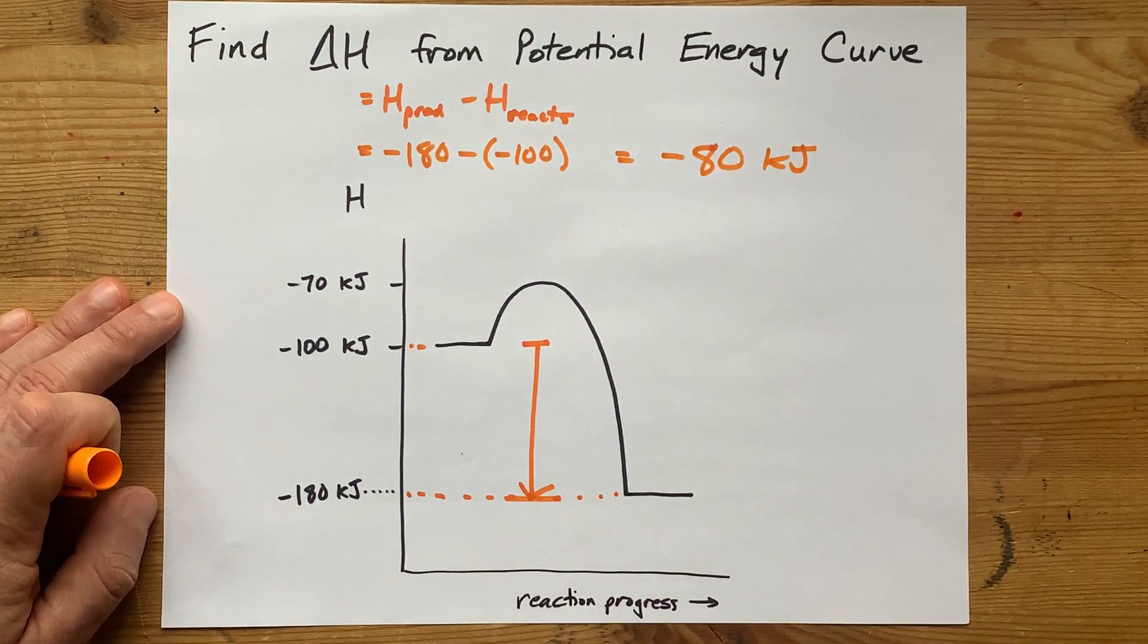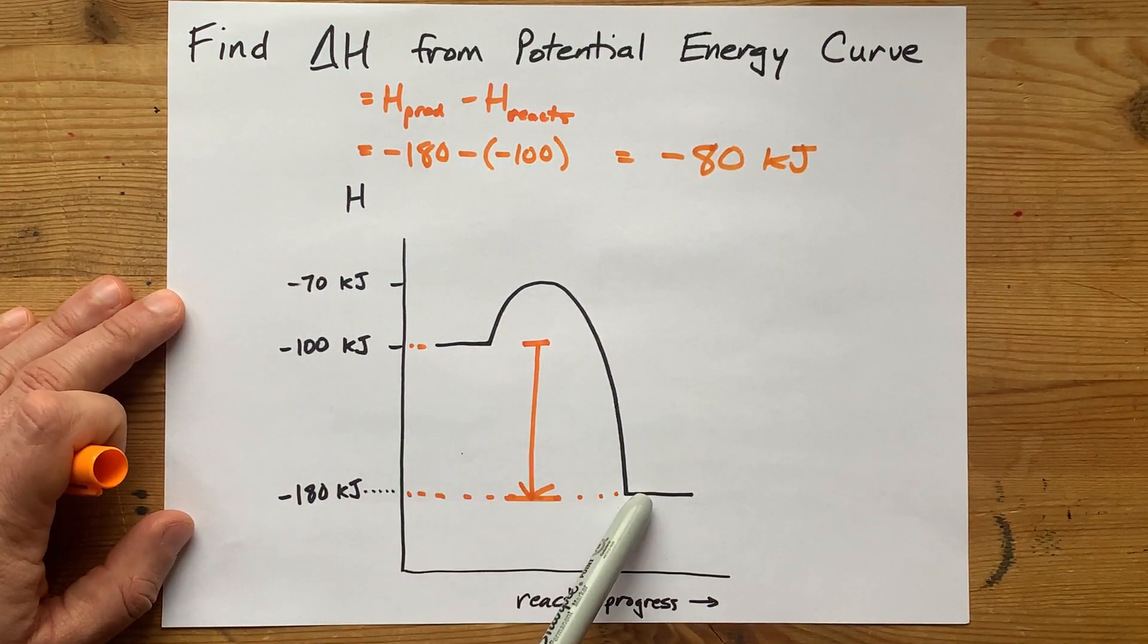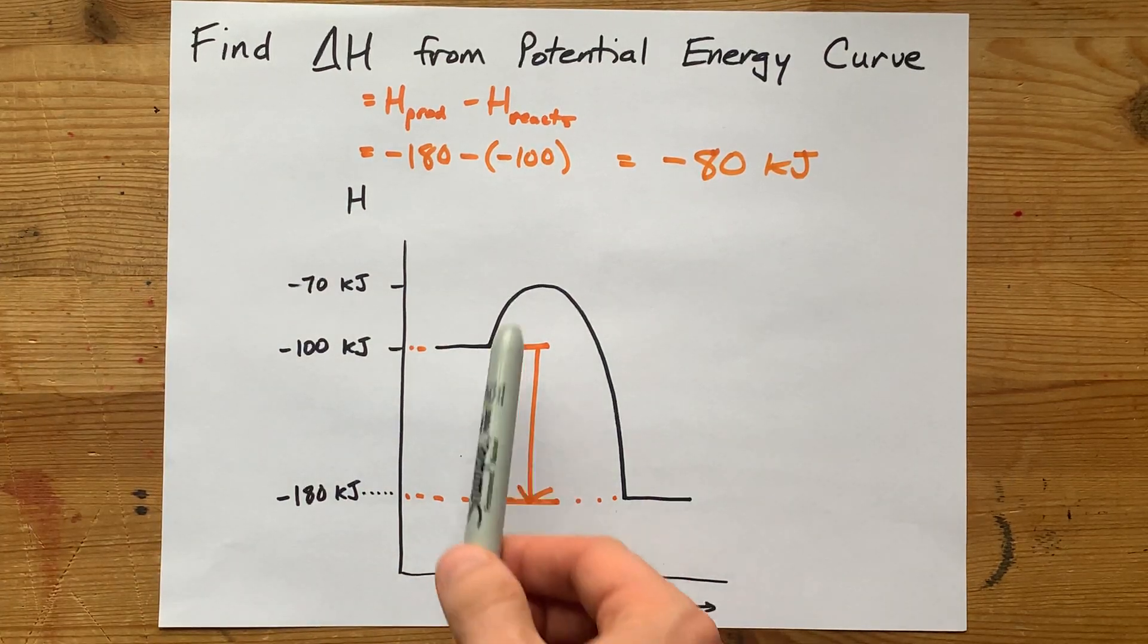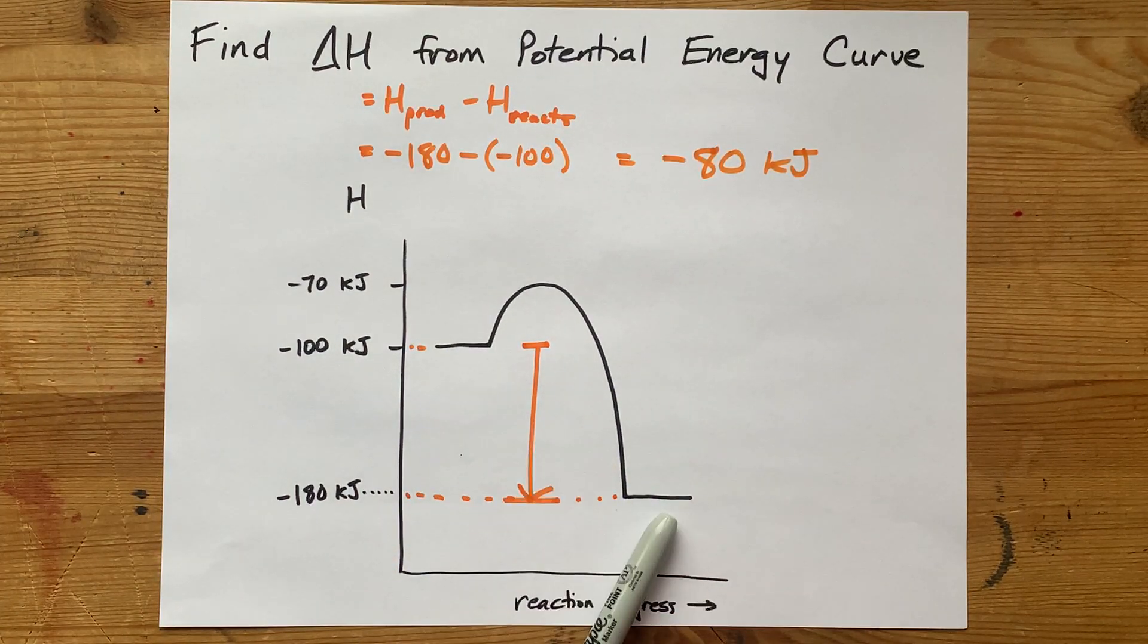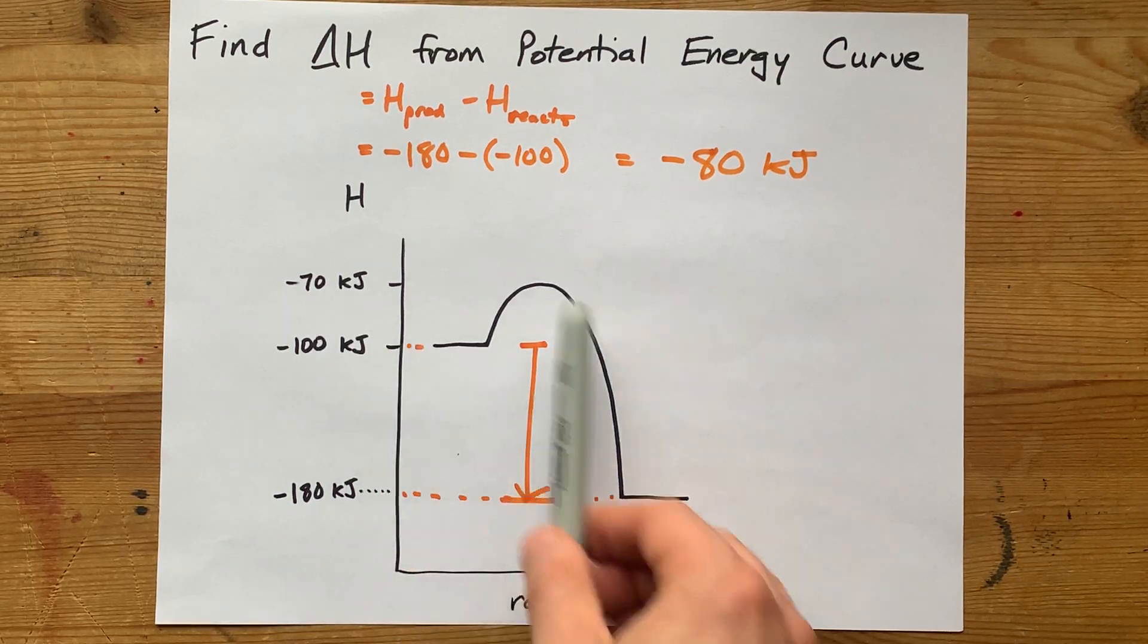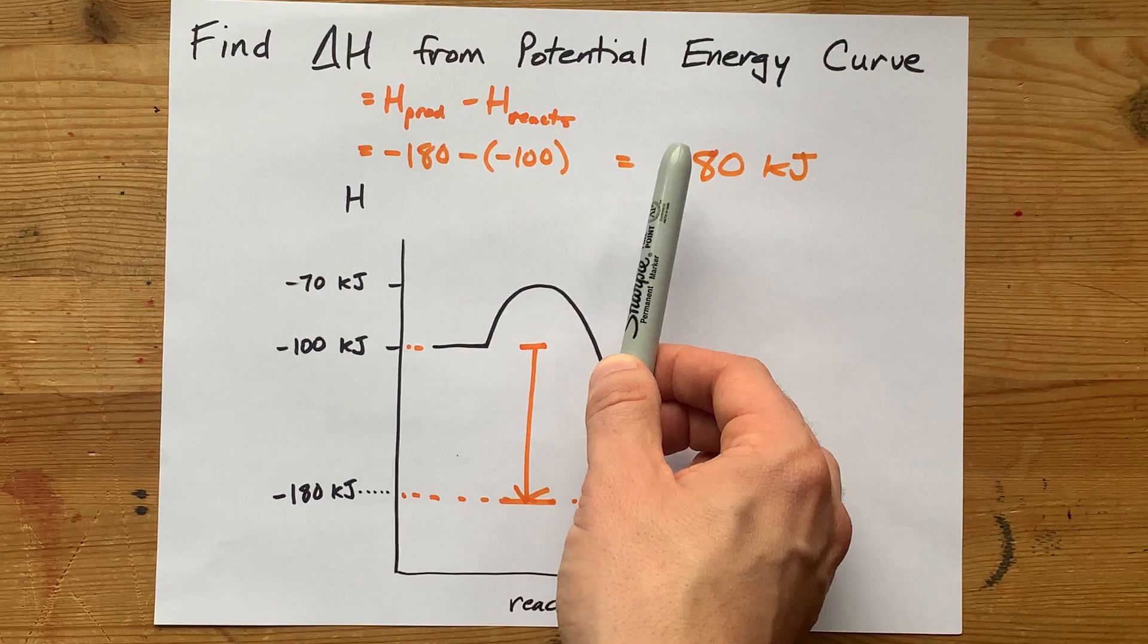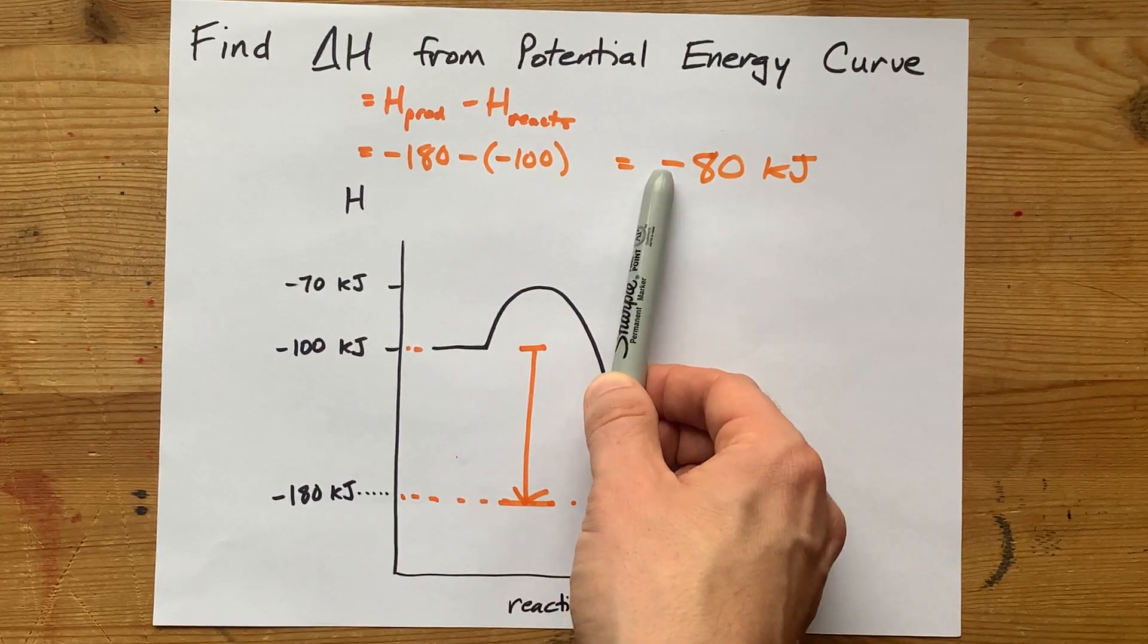And that makes sense because when the reactants are less stable than the products—let me put that another way. When the products are below the reactants on this potential energy curve, we know it's an exothermic reaction giving off heat.